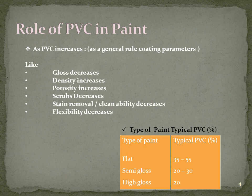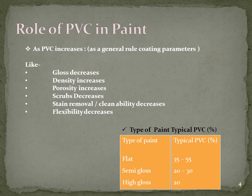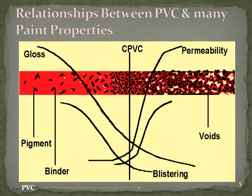Now let's discuss the types of paint. Generally we have flat, semi-gloss, and high gloss paints, and we classify them according to their PVC. Flat paints generally have 35–55% PVC, which is why they don't have much gloss. Semi-gloss paints have less PVC, around 20–30%. High gloss paints have around 20% PVC because we add more resin, and when you add more resin to the formulation, PVC automatically decreases.